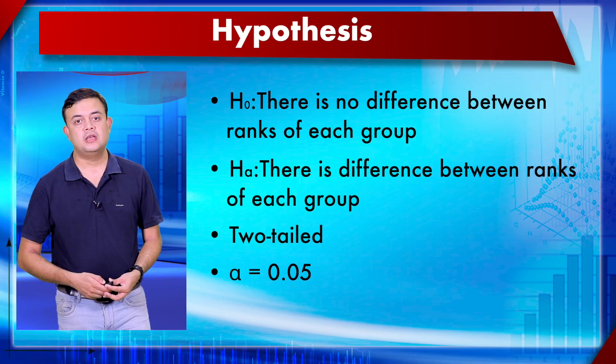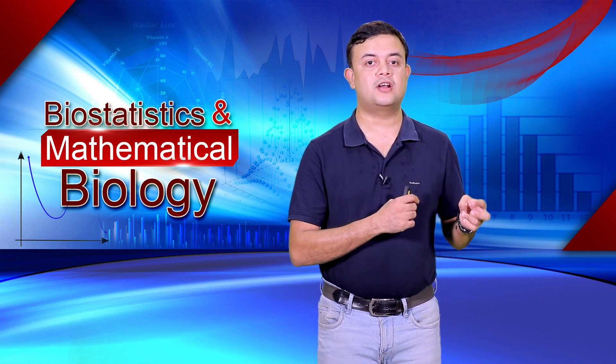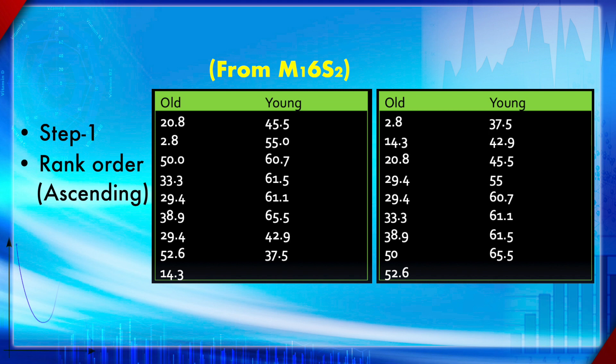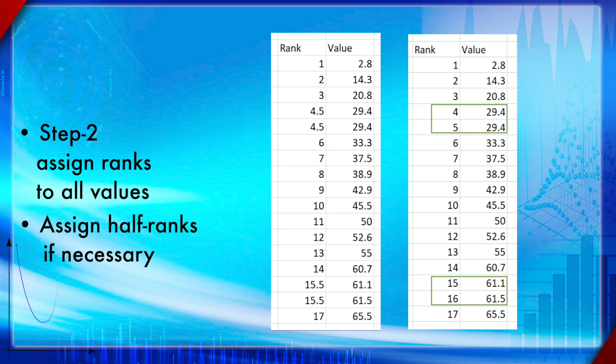Using the old rat and young rat example from an earlier section — the same example used for the t-test — we now redo it using the Mann-Whitney U test. Step one is to arrange everything in ascending order. Step two is to put all values from both groups together into one column, arrange in ascending order, and assign ranks. It's not just one group — the first and second group are all mixed together.